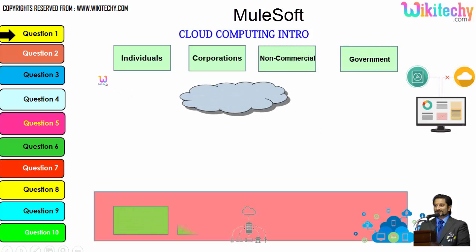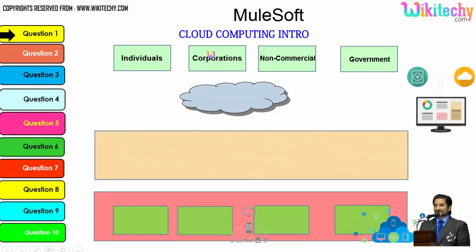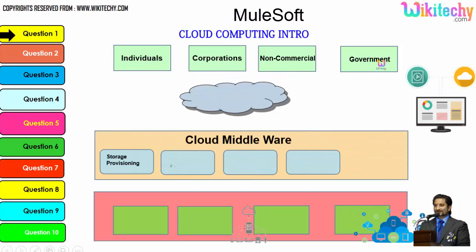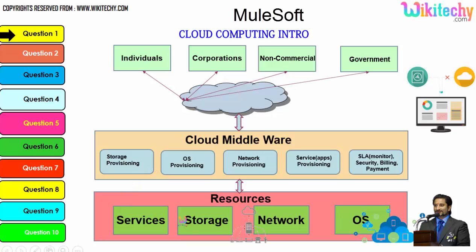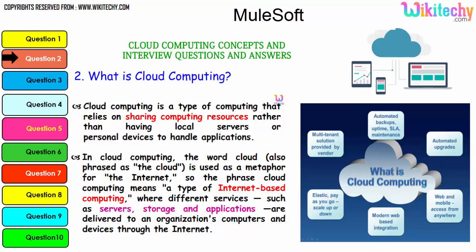There are different types of users: individuals, corporations, non-commercial people, and government. From any of these users, they are able to access services, storage, network, or operating systems via the cloud middlewares — specialized software given by the cloud service provider to access the resources. This is how the cloud computing architecture is structured.